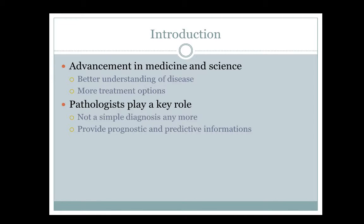Young surgeons today may not even know how to do radical mastectomies anymore, because a good lumpectomy with clear margins and radiation yields the same survival as mastectomy. Axillary lymph node dissection is not a therapeutic procedure — it's more of a staging procedure — which is why we're doing less and less with the axilla now. We also have more treatment options: not just conventional chemo, but targeted therapy, anti-hormonal therapy, HER2-targeted therapy, and now the rising field of immunotherapy.